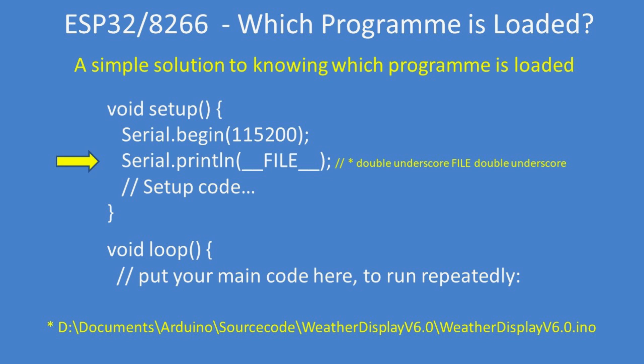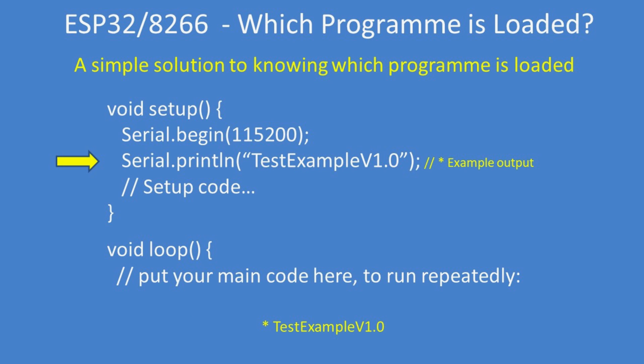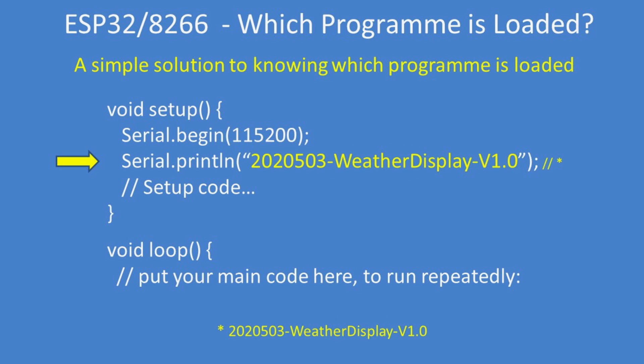And at the bottom there, that's an example of mine. Alternatively, you can just put Serial.println with the version number of the code that was compiled and uploaded to the board — for example, 'Test example version one'.